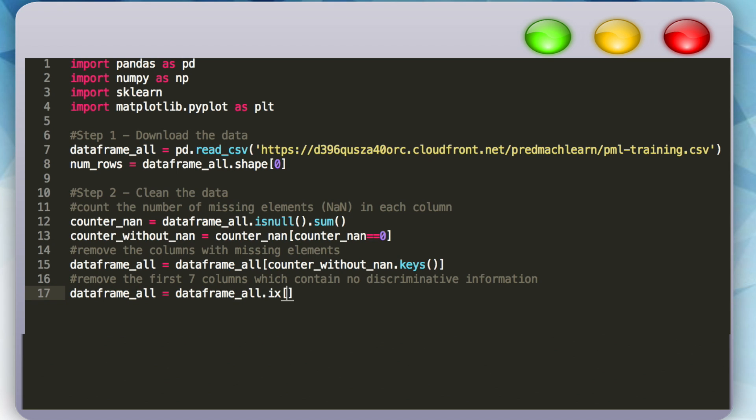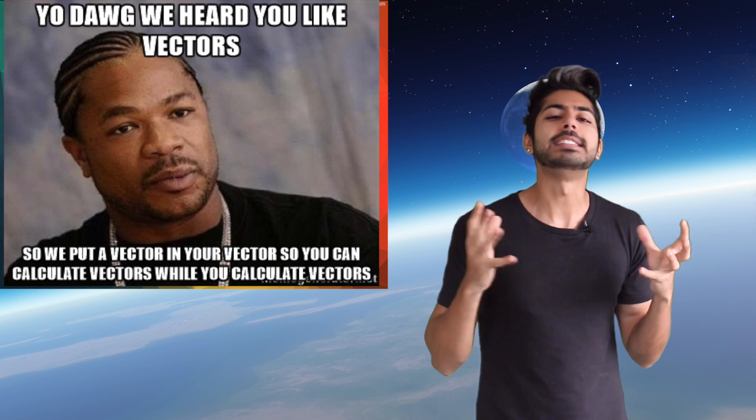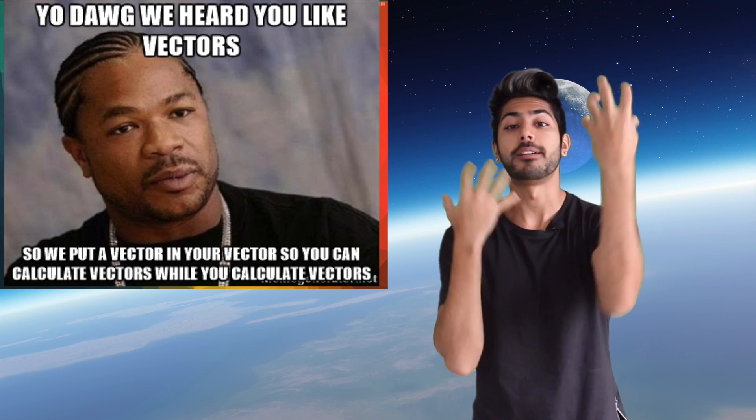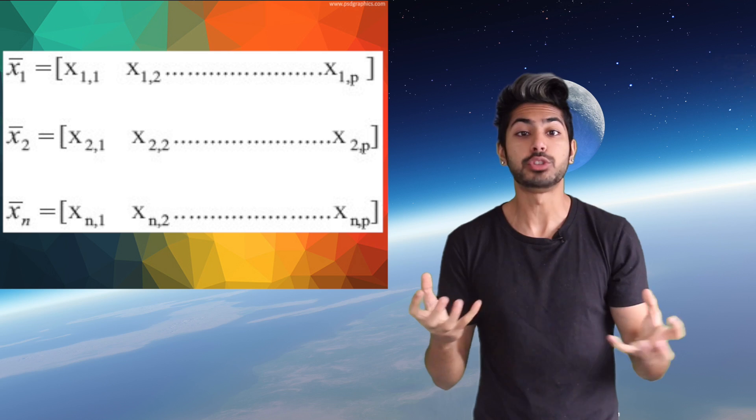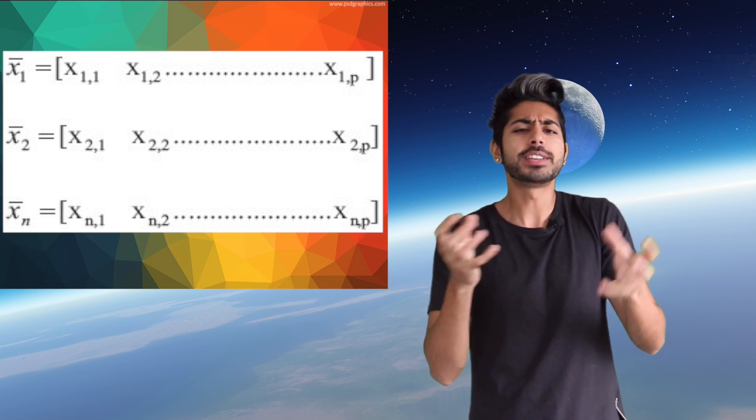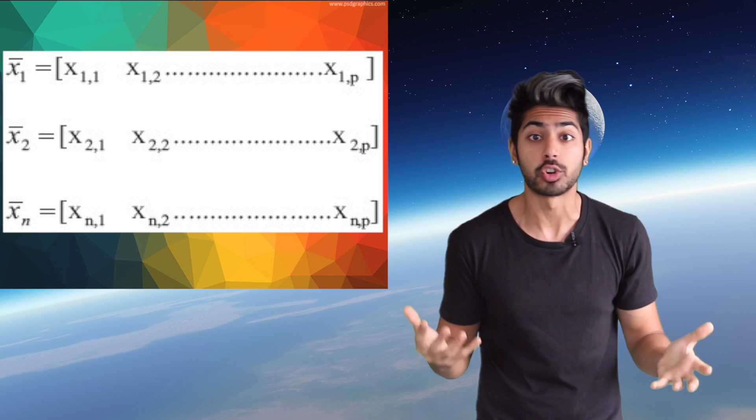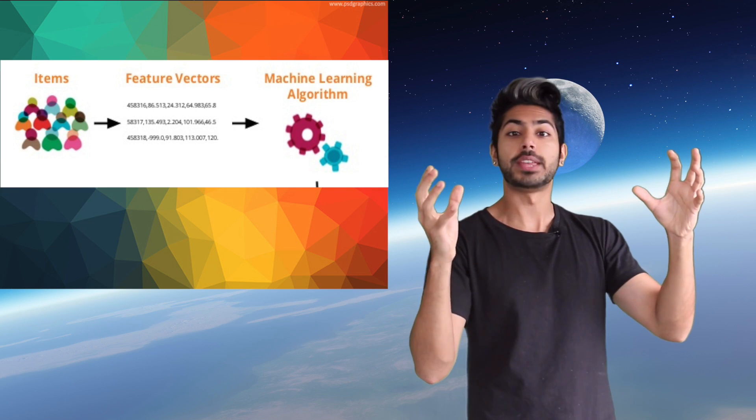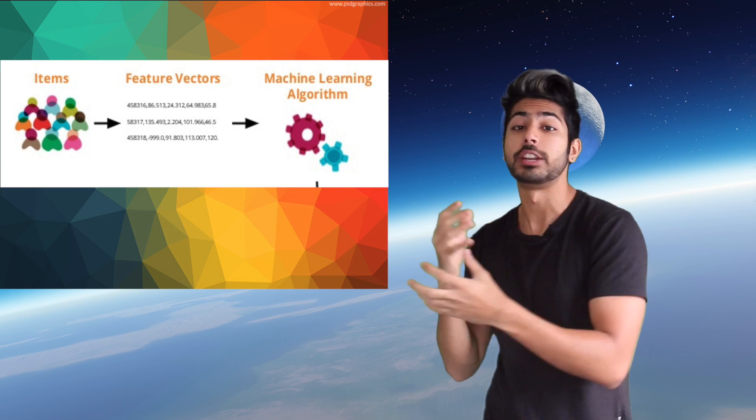We're going to take this cleaned data and transform it into a set of vectors, which we can then feed to our learning algorithm. A vector is a set of numbers and it's how we represent data in machine learning. We'll create vectors to represent the features for each person in our data.